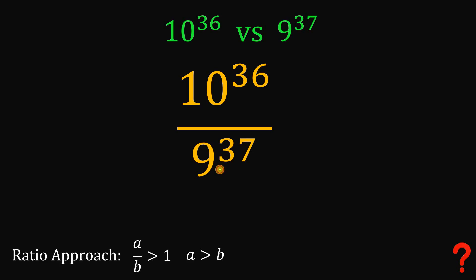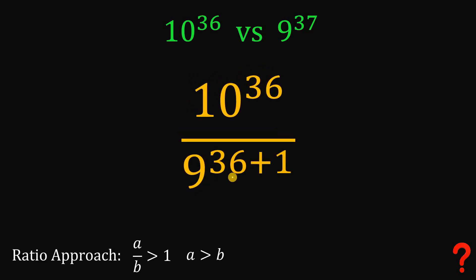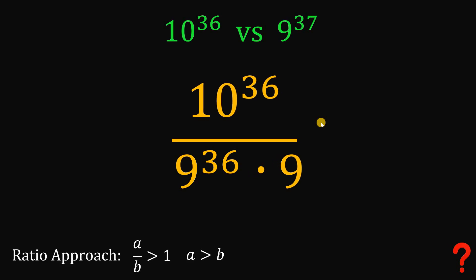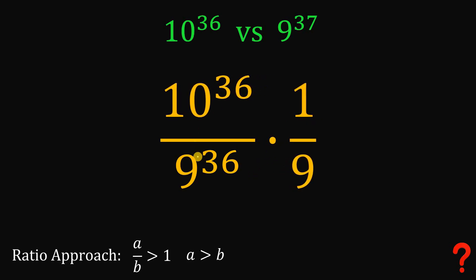Now we're going to focus on the exponent 37, because 37 is simply equal to 36 plus 1. So 9 raised to the power of 36 plus 1, using the laws of exponents, we can rewrite this as 9 raised to the power of 36 times 9 raised to the power of 1. Since multiplication is commutative, we can rewrite the expression as 10 raised to the power of 36 over 9 raised to the power of 36, times 1 over 9.